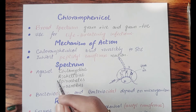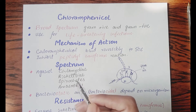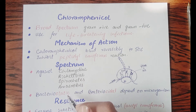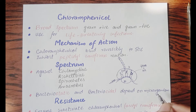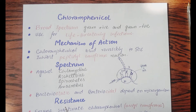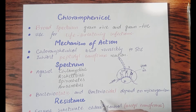Chloramphenicol is effective against Chlamydia, Rickettsia species, spirochetes, and anaerobes. This class of drug is both bacteriostatic and bactericidal, but which effect it shows depends on the microorganism being treated. Depending on the microorganism, chloramphenicol can show a bacteriostatic or bactericidal effect.